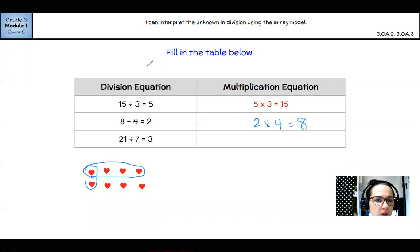Let's look at 21 divided by 7 equals 3. This time I'm going to use x's. All right. So I have to make 7 columns: 1, 2, 3, 4, 5, 6, 7. I'm going to fair share the rest of my 21: 8, 9, 10, 11, 12, 13, 14, 15, 16, 17, 18, 19, 20, 21.